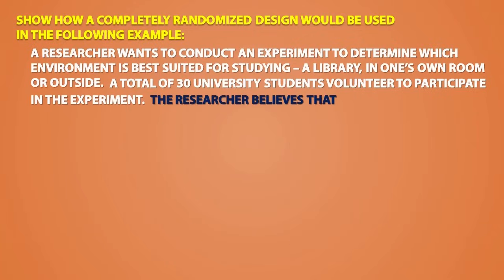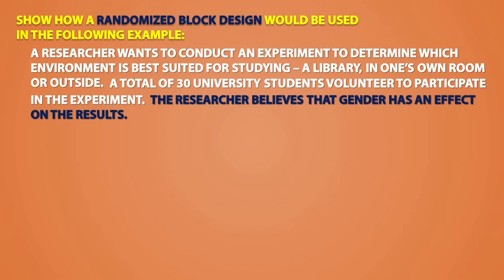Let's say that the researcher believes that gender has an effect on the results. In a case like this, we would use a randomized block design. A randomized block design doesn't immediately randomly assign experimental units to receive treatments. We first assign people into a block based on a characteristic that is expected to influence their response to their treatments.